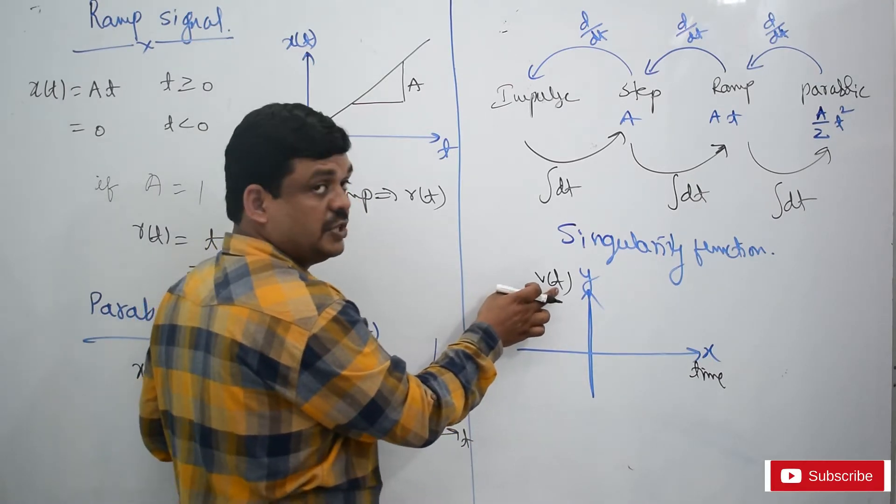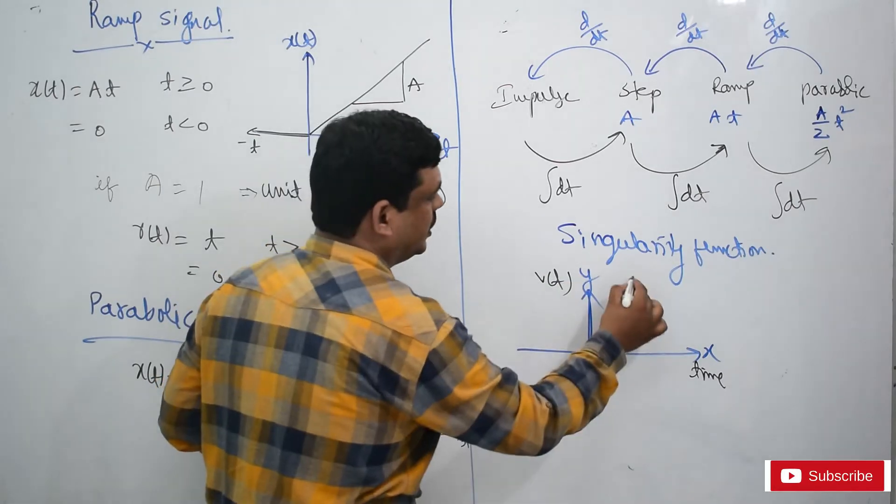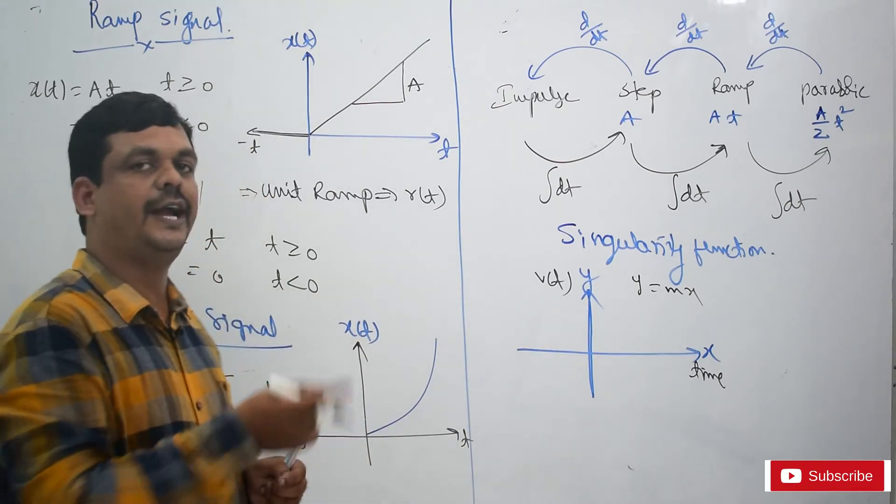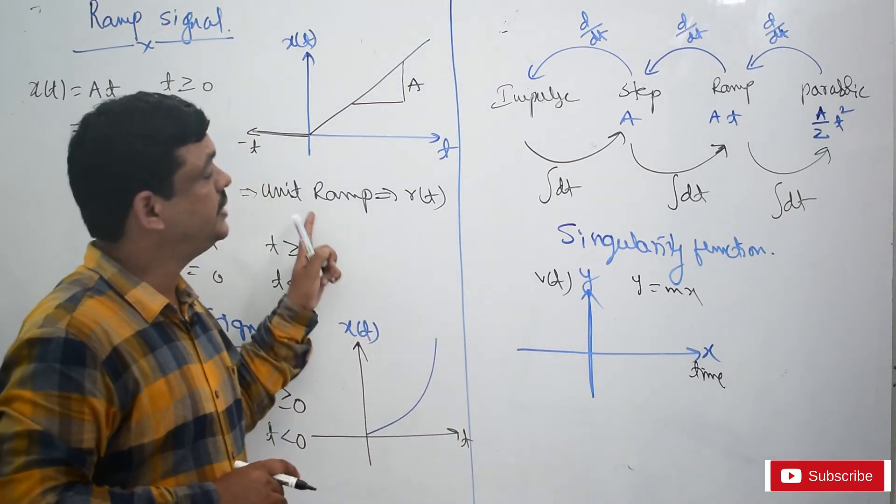So the signal is changing with respect to time. This is one signal, or y equals, here I am writing one equation like this: mx. This is one function. Function and signal, both are the same here, because we have to consider signal is nothing but one-dimensional signal.